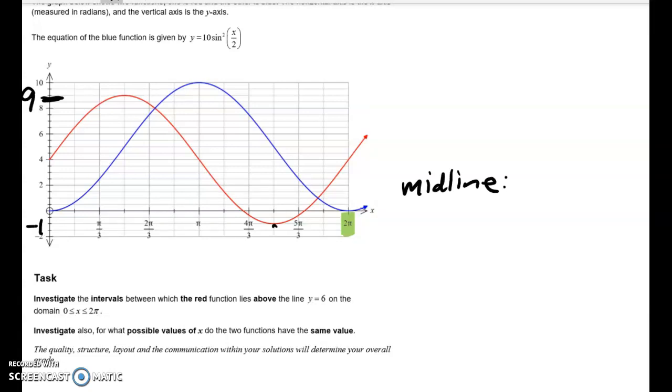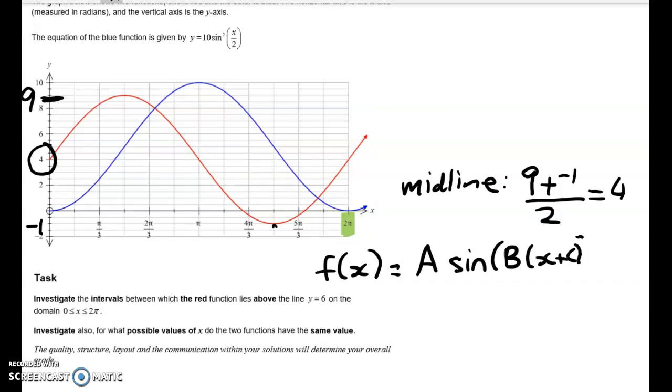So the red function goes from a high value here of 9 down to a low value here of y equals negative 1. So where's the midline? Well, the midline is going to be at 9 plus negative 1 over 2. So the midline's at 4. That makes sense. That's my starting point for the graph. So I'm thinking that I'm going to model this with a sine curve, and my equation will be something like this: f of x is equal to A sin(Bx + C) + D.